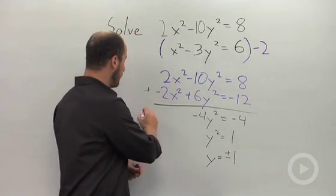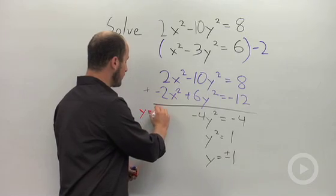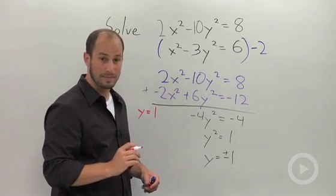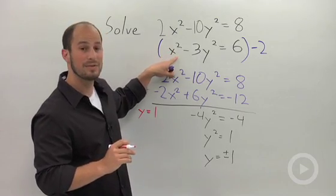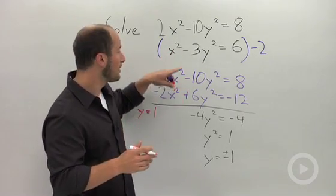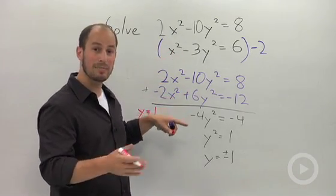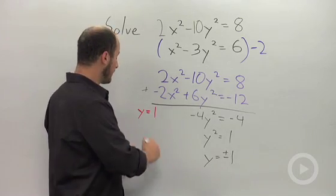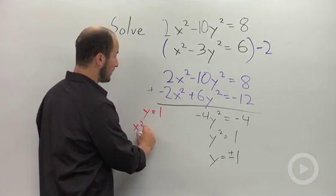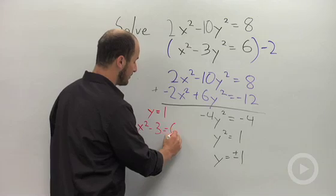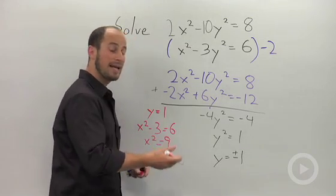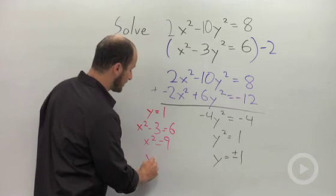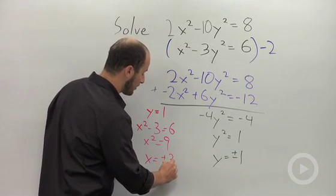So if y equals positive 1 we can go and plug it into either of these equations. The bottom one has smaller numbers so I'm just going to plug it into there. Leaving me with x squared minus 3 equals 6, x squared equals 9, and then take the square root giving us x equals plus or minus 3.